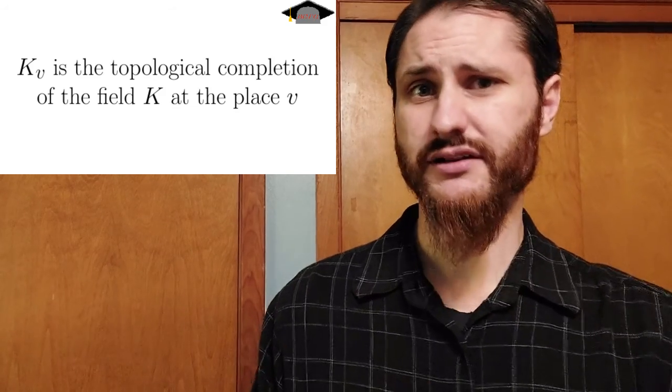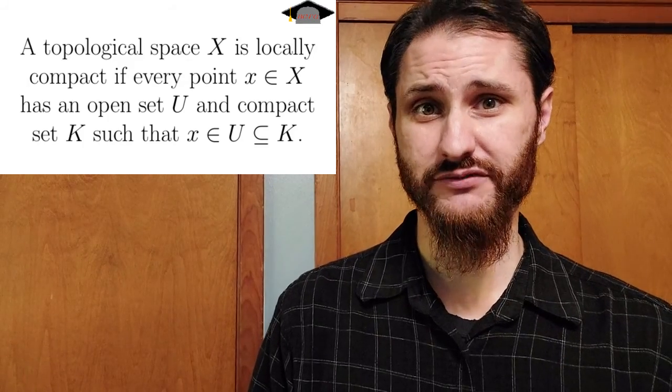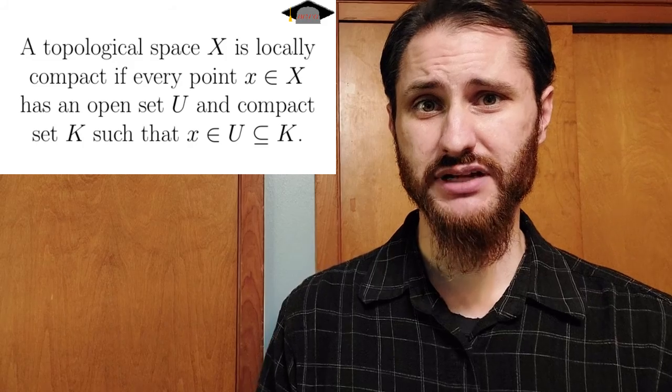A local field, as opposed to a global field, is the topological completion of a global field at any one of its places — much like R is a local field because it's the topological completion of Q at the usual absolute value. You can have a topologically completed field from a function field for any of its places as well. Another important fact about these local fields is that all of them will be locally compact, and that's an important feature we would like to have. If you took a topological completion of some of the other fields we rejected as global fields, it's not guaranteed that the resulting field would be locally compact.